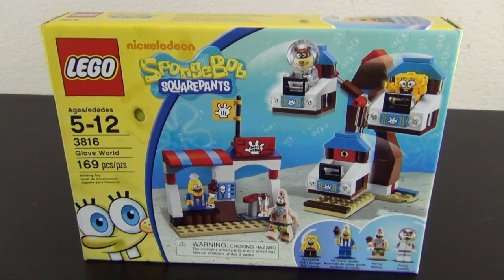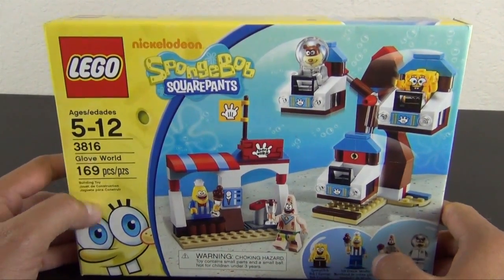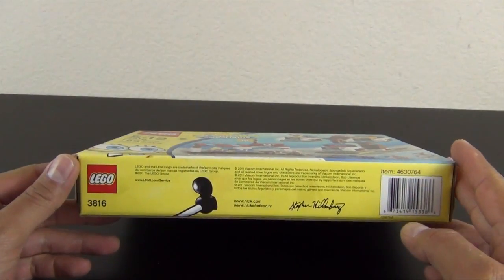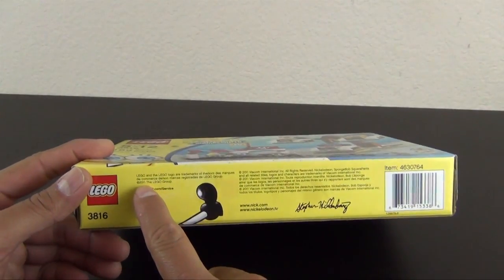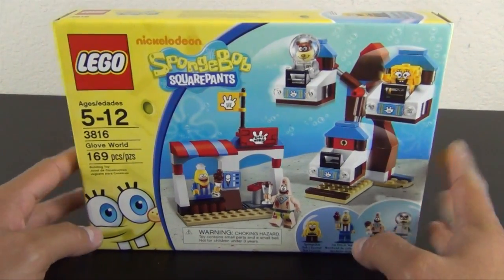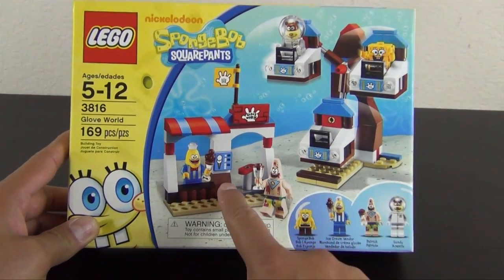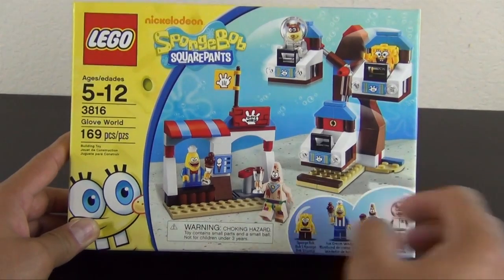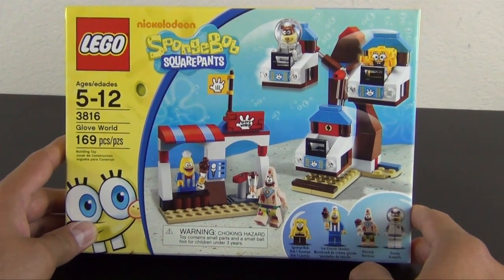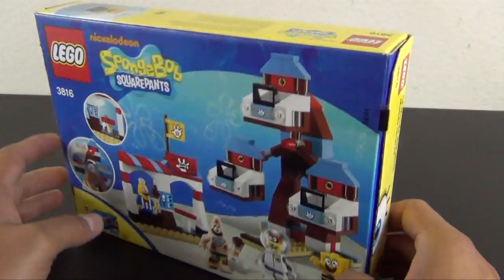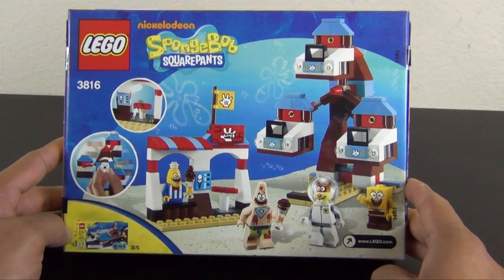Hey everyone, welcome back to the Hidden Brick where today we're going to build the Lego Nickelodeon SpongeBob SquarePants set Glove World. This is set number 3816, 169 pieces. This is a fairly old set, it came out in 2011, so as of recording this is about a five-year-old set. Pretty small, it's got a little concession stand and a micro ferris wheel.